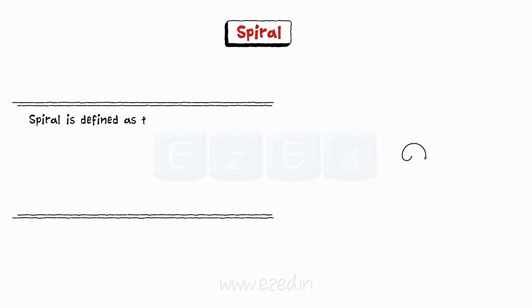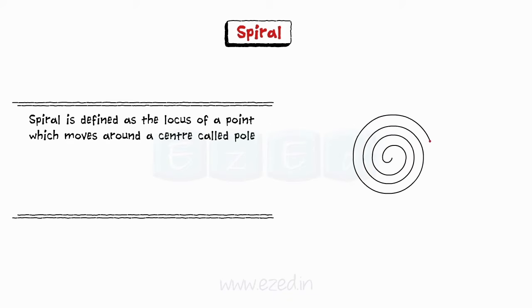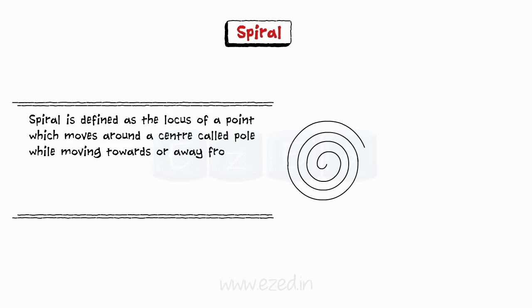Next curve is spiral. Spiral is defined as the locus of a point which moves around the center called pole while moving towards or away from the center.